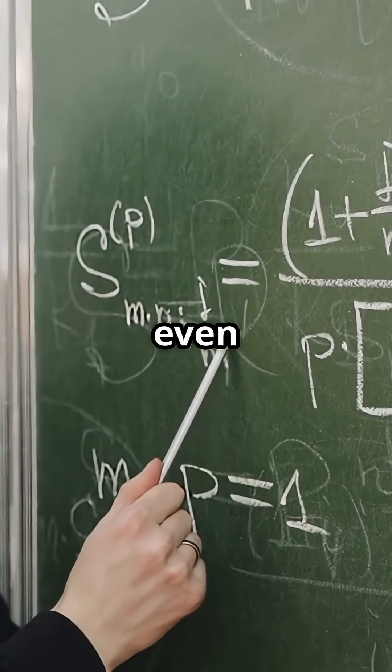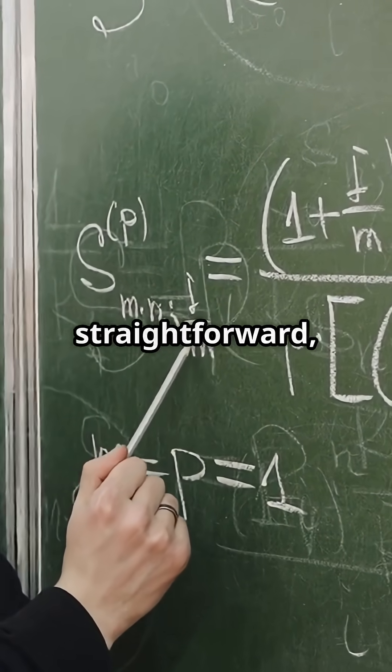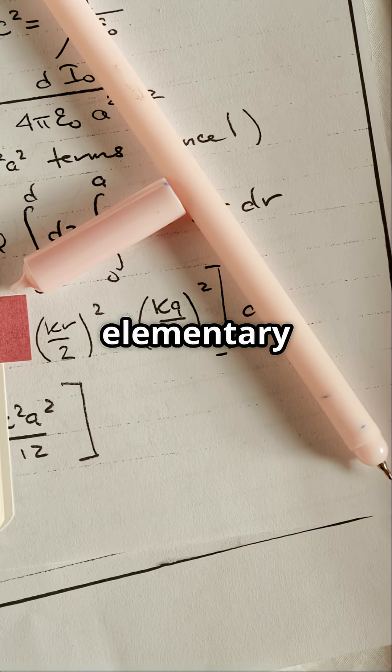The conjecture states that every even number greater than two can be expressed as the sum of two prime numbers, a straightforward, intuitive, almost elementary idea.